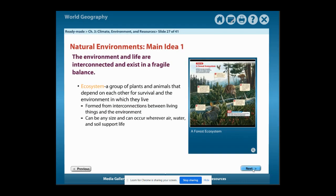Natural environments main idea number 1: The environment and life are interconnected and exist in a fragile balance. Ecosystem: a group of plants and animals that depend on each other for survival and the environment in which they live. Formed from interconnections between living things and the environment.